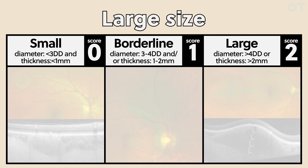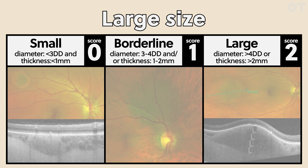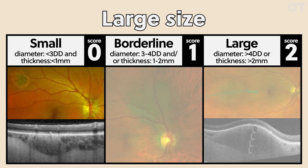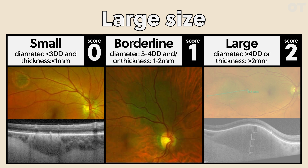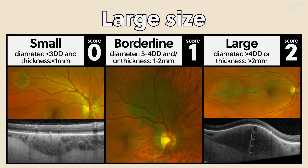The next category is size — looking at diameter and thickness. If the lesion is less than three disc diameters or thickness is less than one millimetre, it scores zero. If the diameter is between three and four disc diameters or thickness is between one and two millimetres, it scores one. If the diameter is greater than four disc diameters or thickness is greater than two millimetres, it scores two. OCT is a great way of measuring thickness — just put your caliper at one side of the tumour and drag it to the other side.